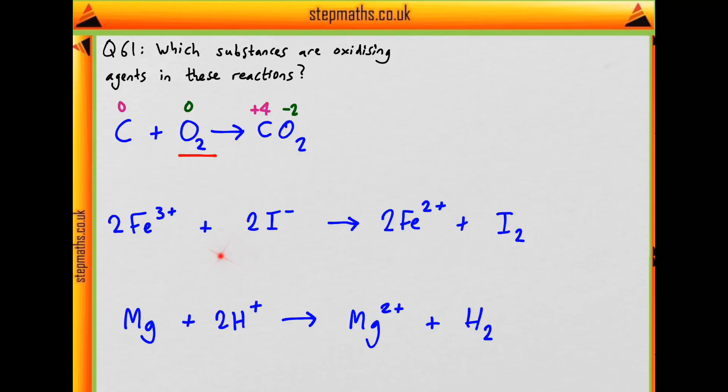In our second reaction, what are the oxidation states? Iron, being a 3+ ion, is naturally +3. Iodide is 1-, so it has a -1 oxidation state. What about in the products? We go to 2+ for iron, and what's iodine? It's an element by itself, so it must be 0.